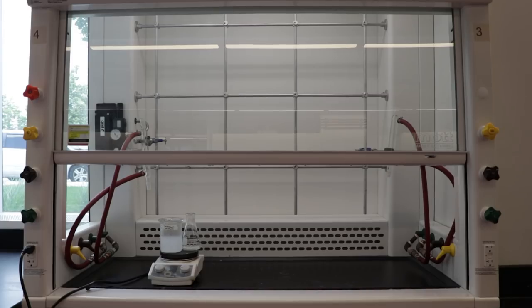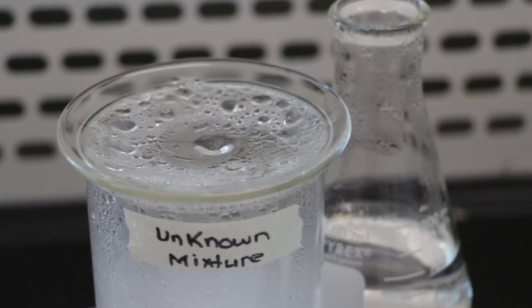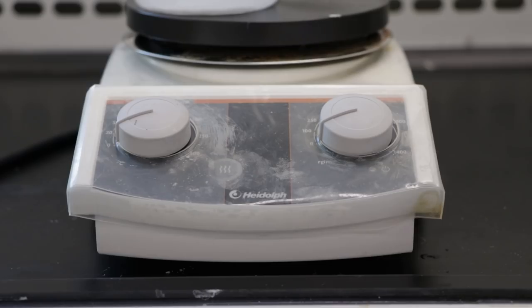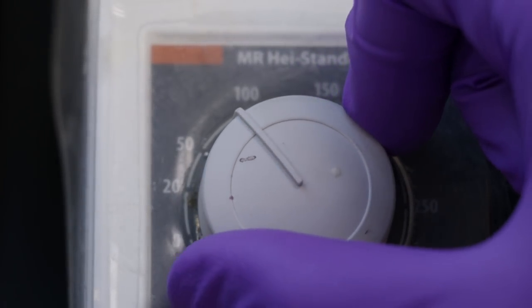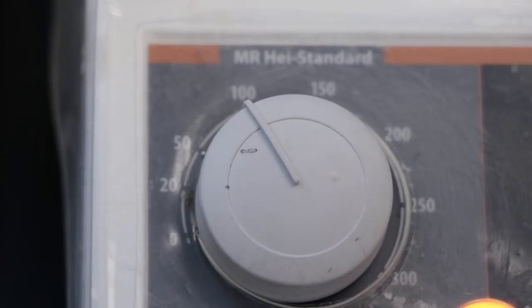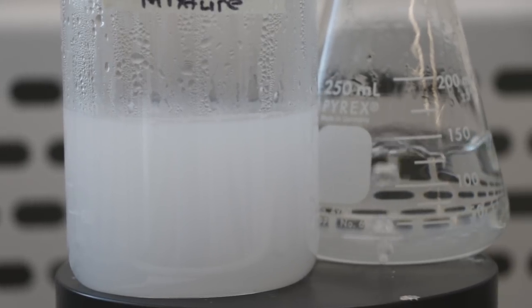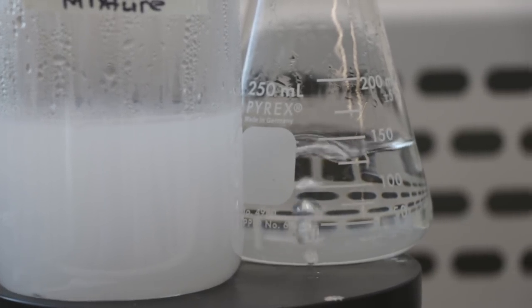Moving over into the fume hood, make sure the beaker is covered with the watch glass. Turn on the hot plate and set the dial to 90 degrees. Heat the solution and 150 milliliters of distilled water in a 250 milliliter Erlenmeyer flask for 30 minutes.